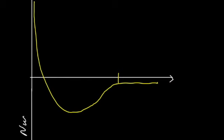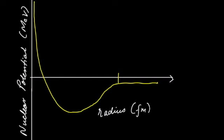Consider a plot of the nuclear potential against the radius of the nucleus. The negative potential denotes attractive force, whereas the positive potential denotes repulsive force.